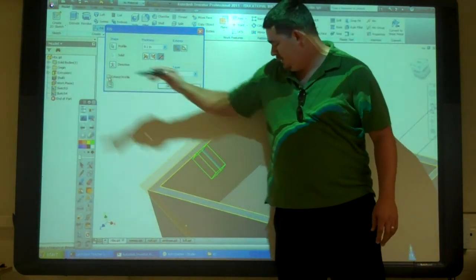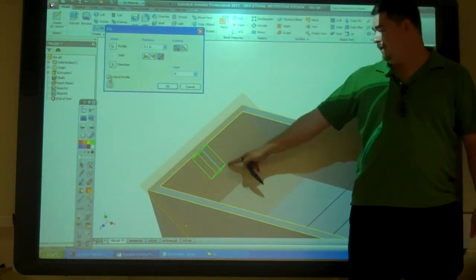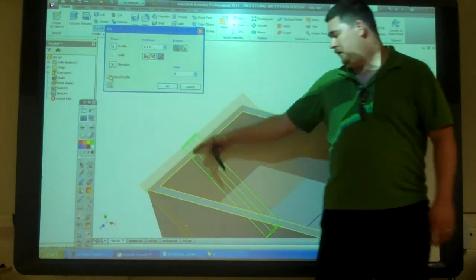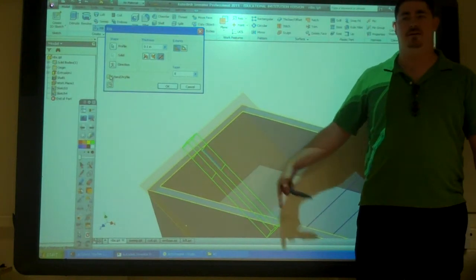Here I set my extents. This extend profile, if I take that off, look at it. Now it is only going the length of my sketch. If I turn that extend profile on, now it is going to extend all the way out to the next phase.